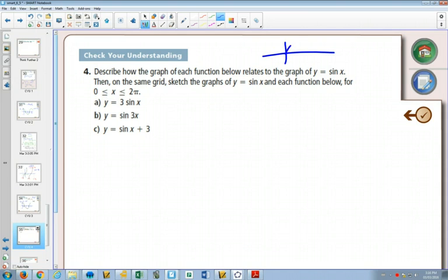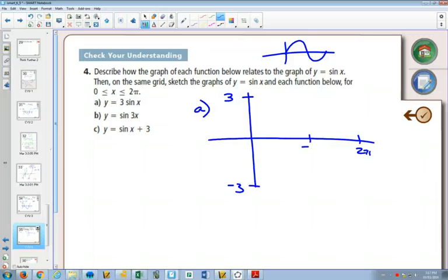So first of all, we know that our sine graph looks like this. What does the three out in front change? It's going to change our minimum and maximum, our amplitude. It's still going to go from 0 to 2π. Split it up into four sections. Sine graph starts in the middle, goes to a max, back to the middle, down to a minimum, back to the middle. There's part A, changing only the amplitude.